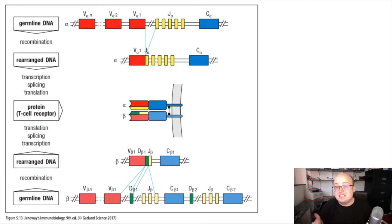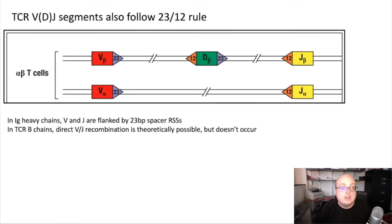TCR recombination also follows the 23-12 rule that we introduced earlier. The V, D, and J segments are flanked by recombination signal sequences. Those RSSs have spacers which determine how RAG is able to interact with them. The alpha chain looks similar to the immunoglobulin light chain. The Vs have a 23 base pair spacer, the Js have a 12, and so they associate with each other. That follows the rule.